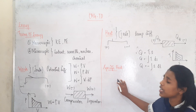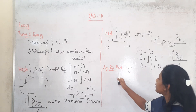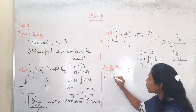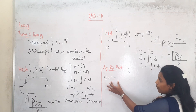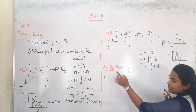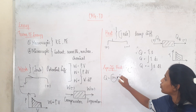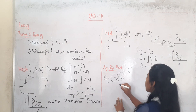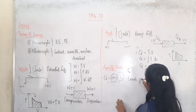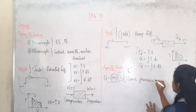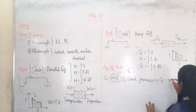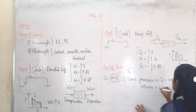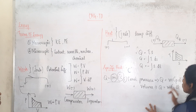Now when we come to specific heat, specific heat is denoted by capital C. It is defined as the amount of heat required to raise the temperature of one unit of mass per degree Celsius. There are two types for gases: with constant pressure we get Q = M·Cp·dT, and for constant volume we get Q = M·Cv·dT. So these are the two formulas.